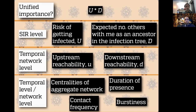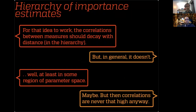Let's go to the results — or my confusion. For the hierarchy idea to work, measures at adjacent levels should be more highly correlated than measures far apart. This doesn't really hold in general. Maybe it's true in some regional parameter space. The correlations between reachability and SIR importance measures are not that high. I show the Kendall tau correlation between downstream reachability and the size of the downstream infection tree. On the x-axis is transmission probability, on the y-axis is recovery rate. Correlations are highest in the region of intermediate outbreak size — at least the most interesting region.